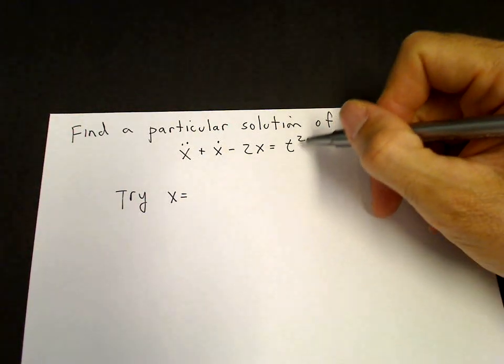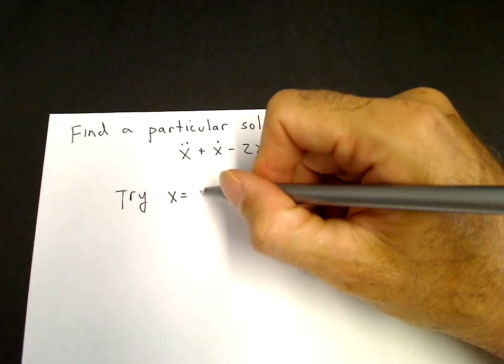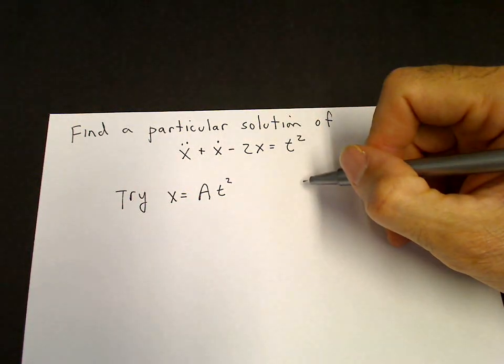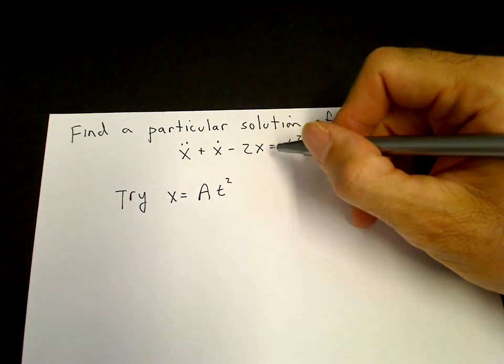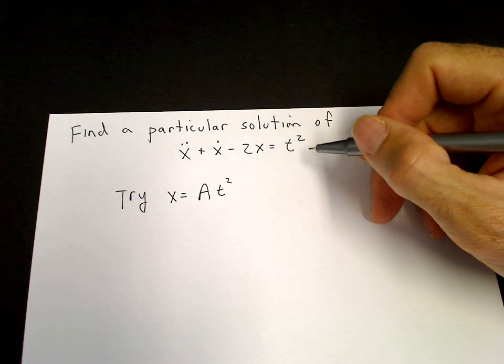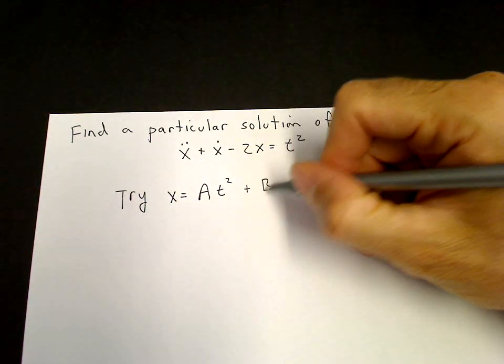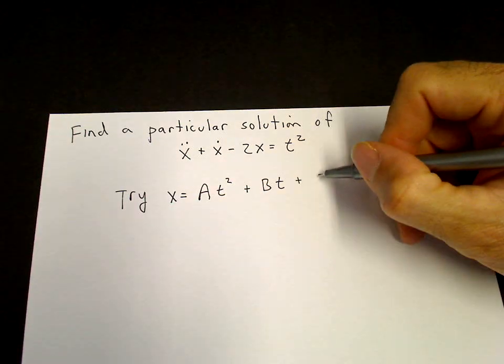So when the right hand side is a polynomial, we have to make sure that we carry enough lower order terms in the polynomial to match the left hand side. Here when it's t squared, we have to carry a t squared, a t and a constant term.